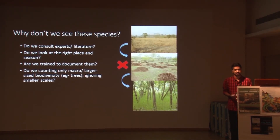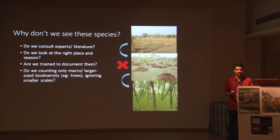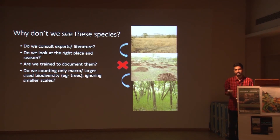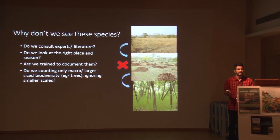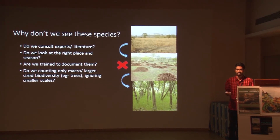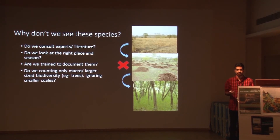Many people ask why they don't see all these species when they go to the field. If you go to the field you may see just a few species, but for these things you actually need to consult literature, read up, and go at the right place and right time. If you go in the wrong season, or look for a nocturnal species in the morning, you obviously won't see anything - and then conclude this area has no endemic species, and that plantation won't make any difference. Second, do we really count only big or macro things as diversity? We also ignore smaller-scale things - herbs, small insects - which are an integral part and need to be included.